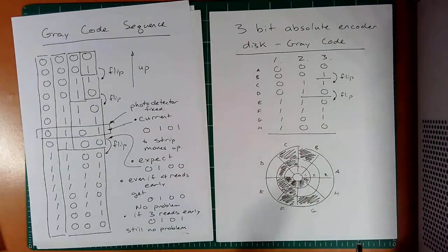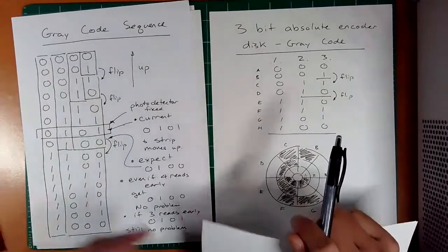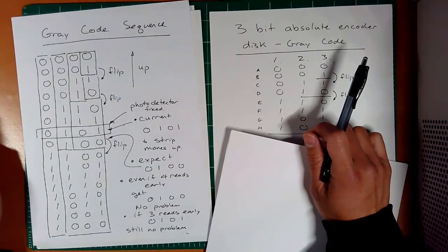All right. Well, I hope this very short and simple lecture helped you understand gray code and how an absolute encoder worked. I hope to see you in the next lecture after this. Have a great day.